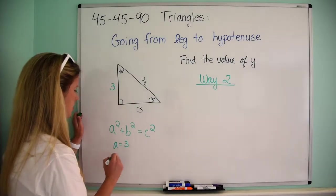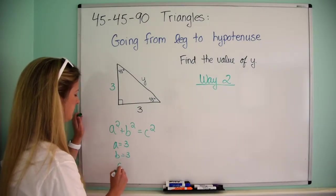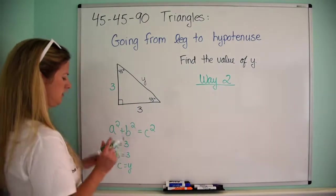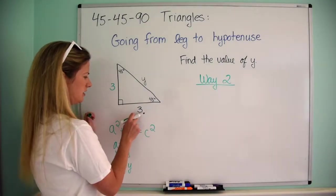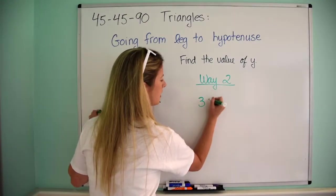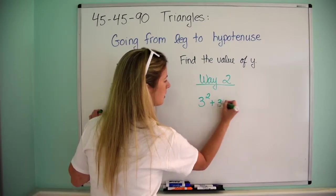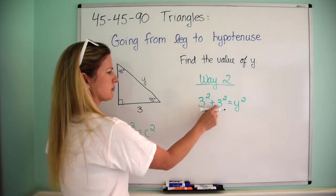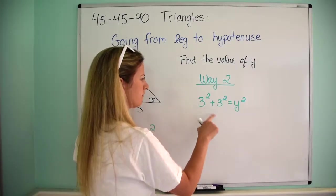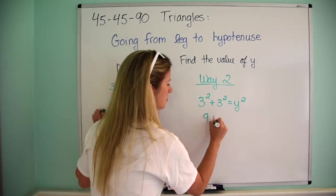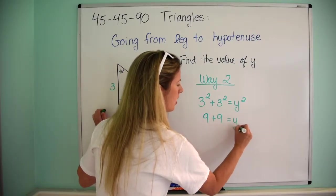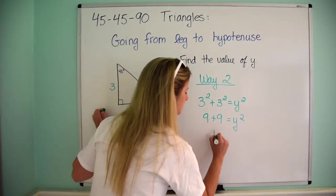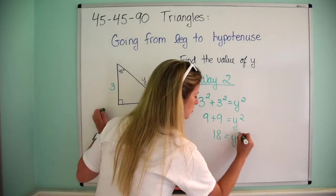So a equals 3, b equals 3, and c in this case is y because that's what we're calling the variable. So all I need to do is say 3 squared plus 3 squared equals y squared. Oh my gosh, I have saved the day here. Awesome.